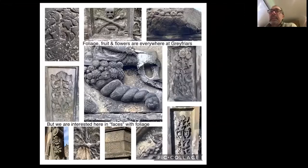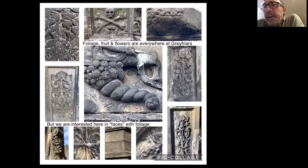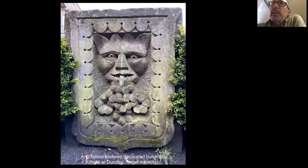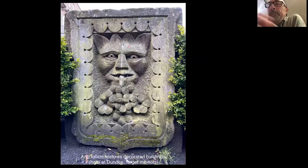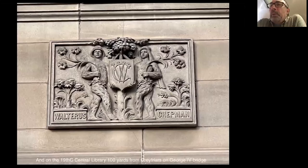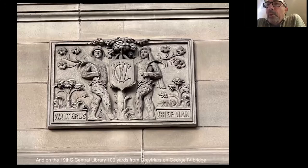All around the churchyard we have numerous examples of foliage, fruit and flowers as recurring images on many panels and many facets of the graveyard. But those aren't associated with faces - they're just foliage in their own right. It's where the foliage is actually associated with a face that's of interest. And it's not just at Greyfriars we see this. Everywhere around Scotland we can see faces decorating buildings - in this case a face from Dundee that is effectively just gorging forget-me-nots.